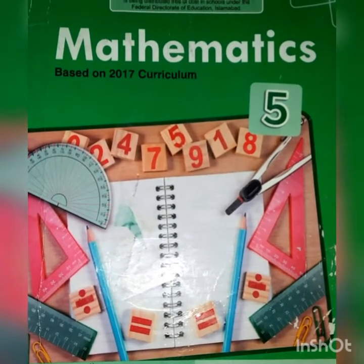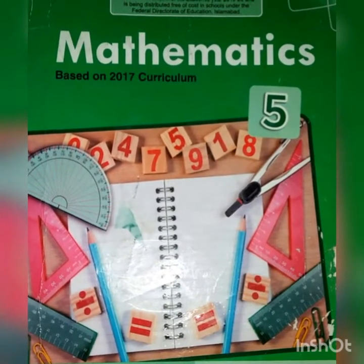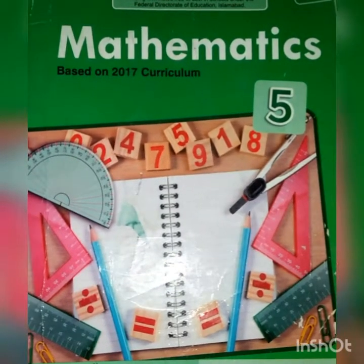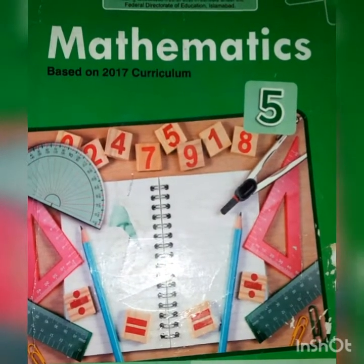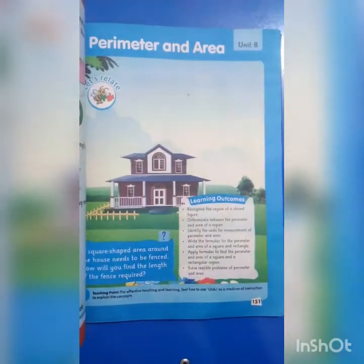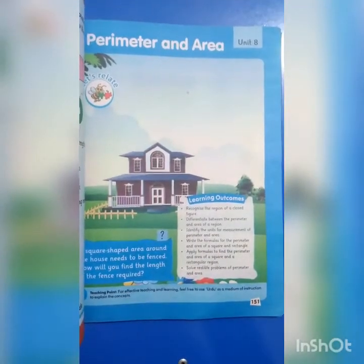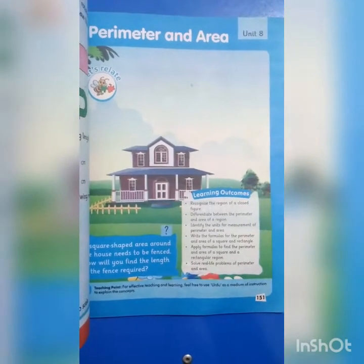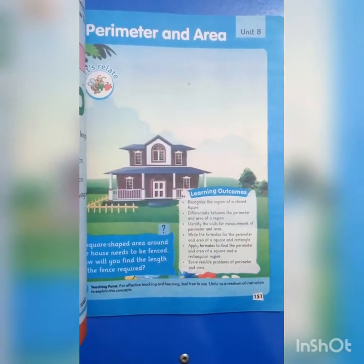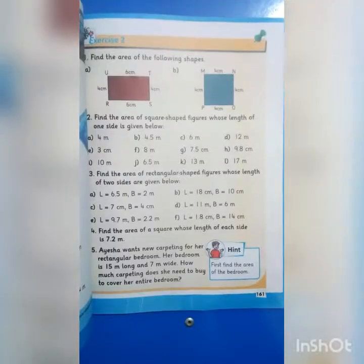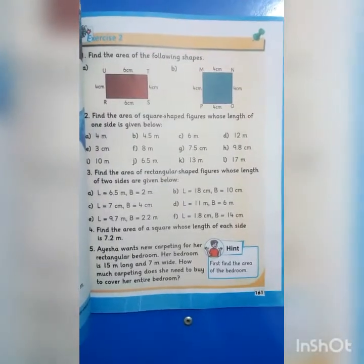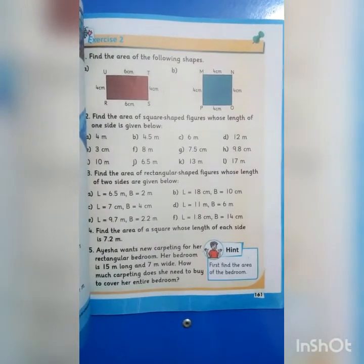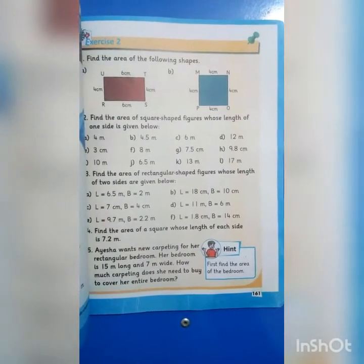Bismillahirrahmanirrahim. Assalamualaikum dear students. Hope you all will be fine and safe. Dear students, today we will learn Primary Mathematics of Grade 5. In Mathematics, we will learn Unit No. 8, Perimeter and Area, Exercise 2 on Page No. 161. So, let's start.